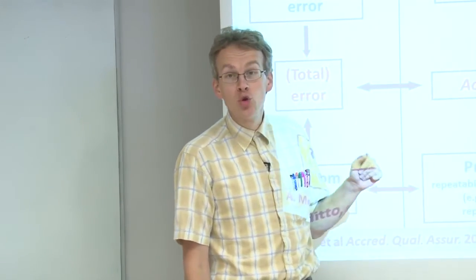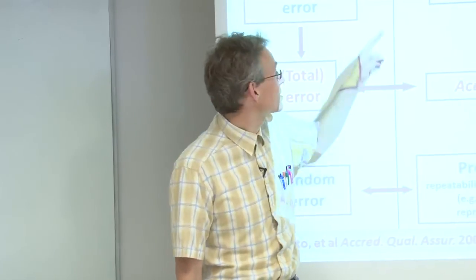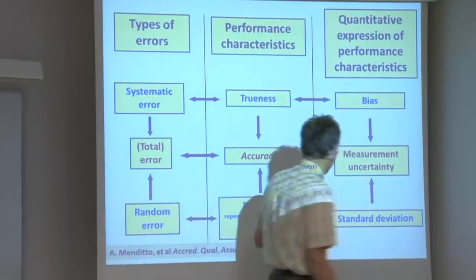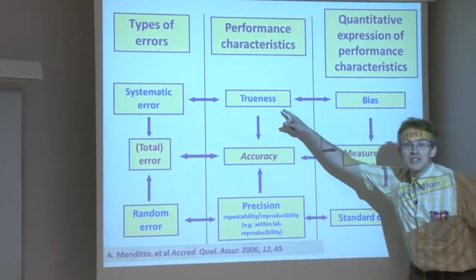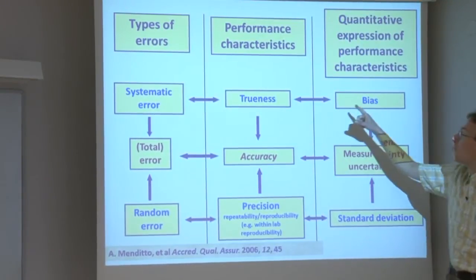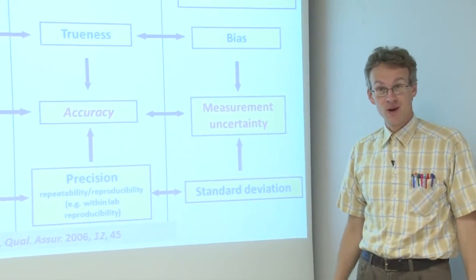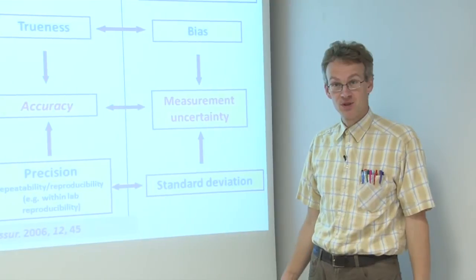Now, how do we numerically express these? Let us now look at the last column. Trueness is numerically expressed by bias, whereby bias is the difference between the reference value and the value that we obtain from the measurement.